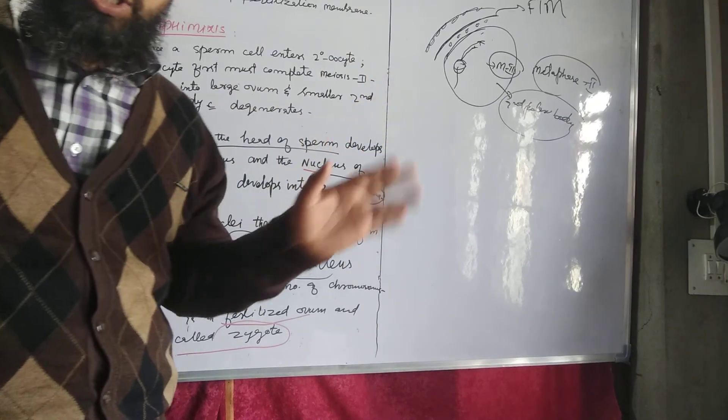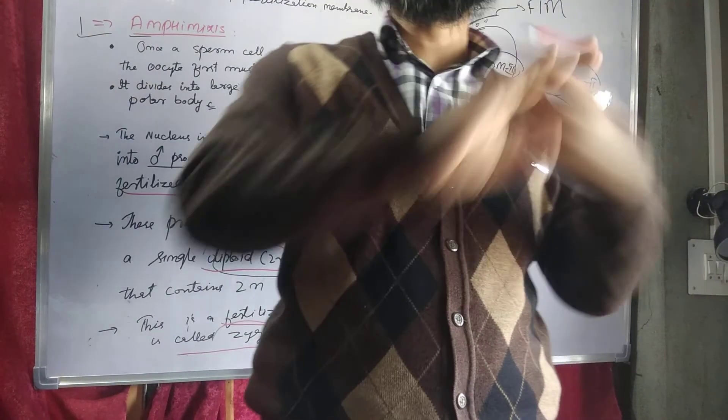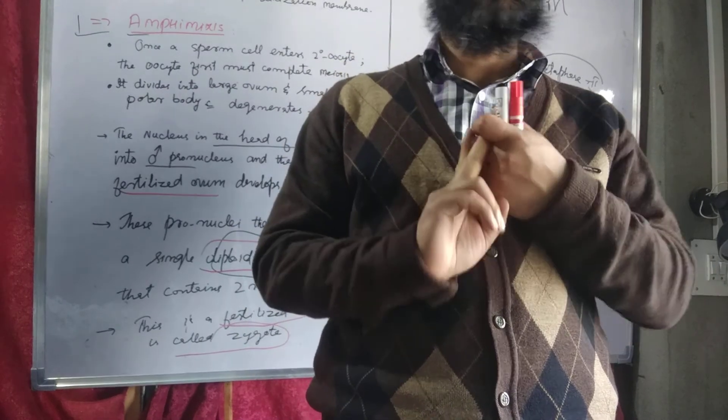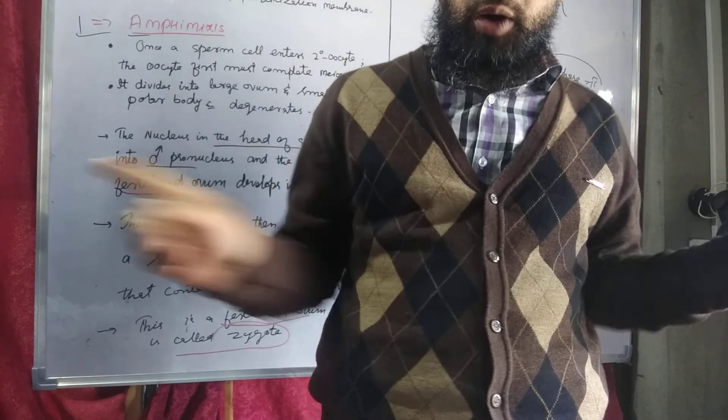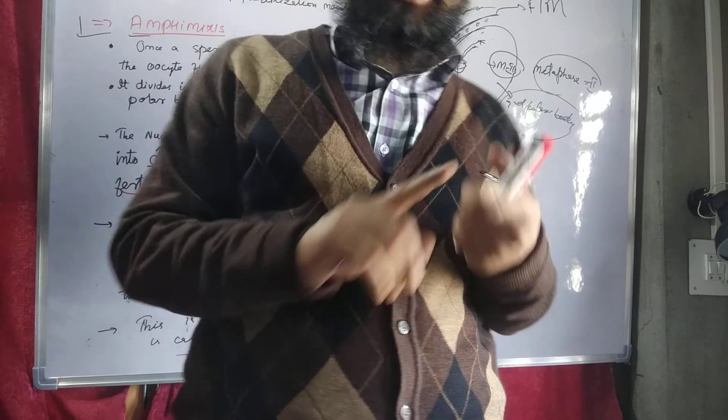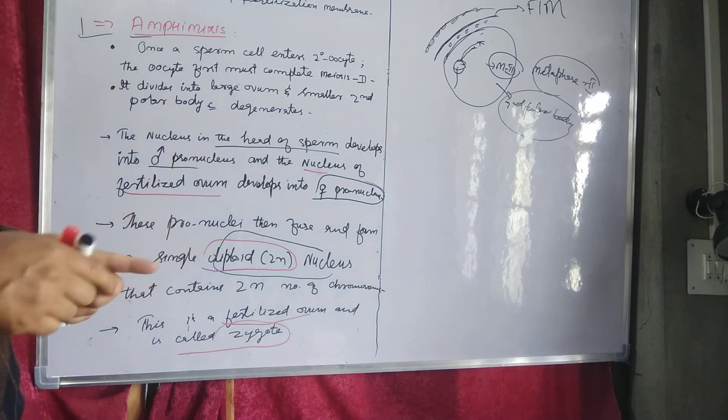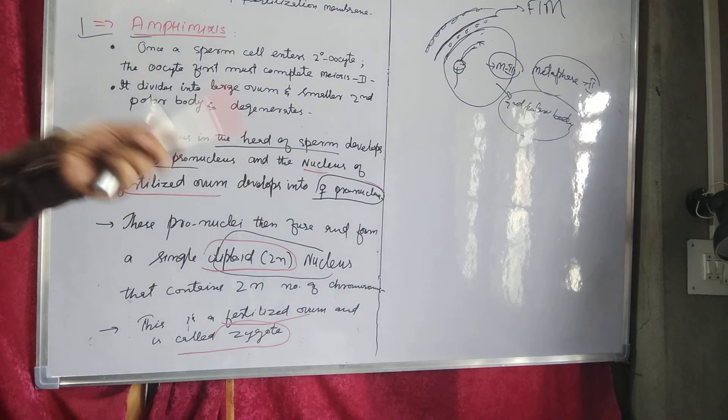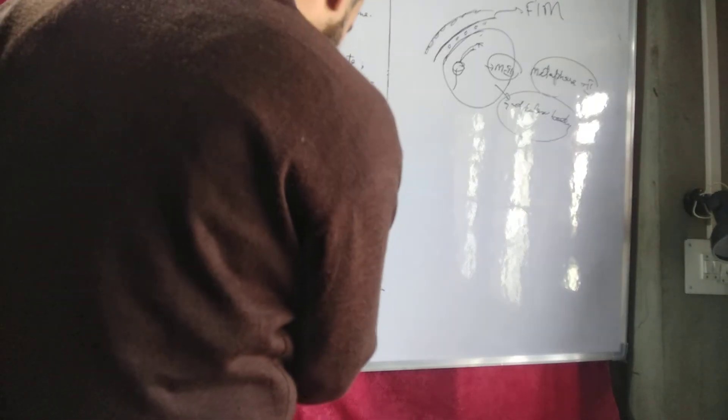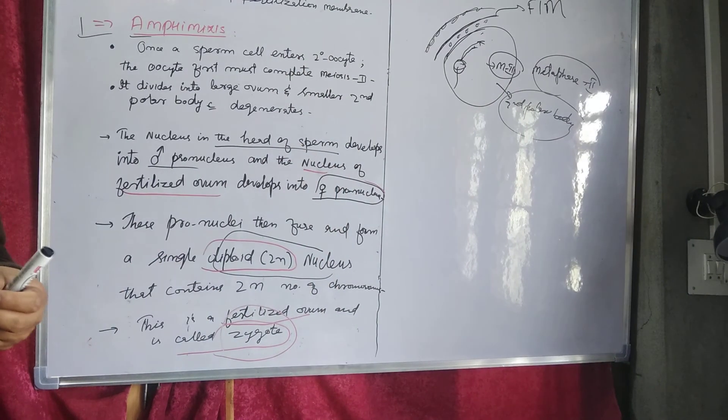If fertilization does not occur, the secondary oocyte will degenerate within 24 hours. But if fertilization occurs, the secondary oocyte will complete meiosis second, release the second polar body, and develop into a fertilized ovum known as zygote. Thank you.